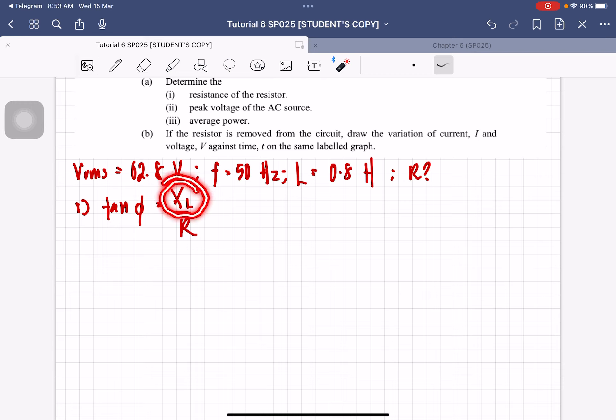We just have to find the inductive reactance. So the inductive reactance is just 2 pi FL, which will be 2 pi, F is 50, L is 0.8. So XL, the inductive reactance is actually going to be equal to 80 pi ohm.